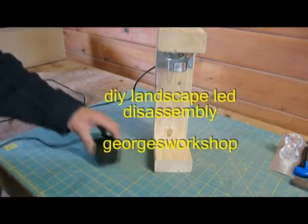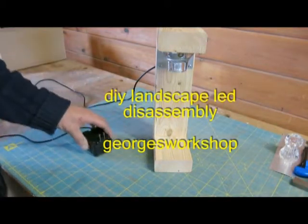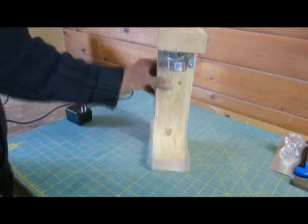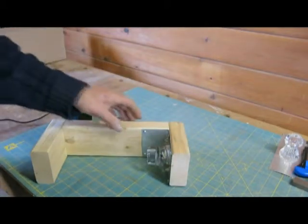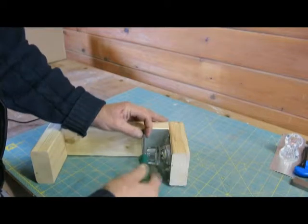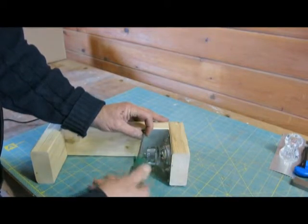This is a disassembly video. I'm going to show you how simple it is to take apart this outdoor landscape lamp. First of all, I'm undoing two screws here on the reflector.